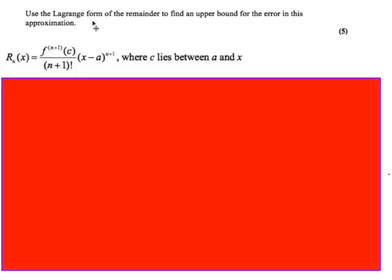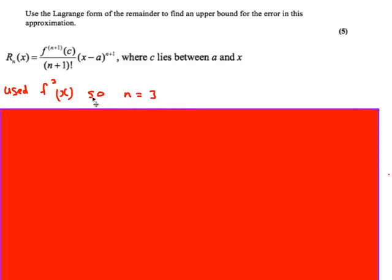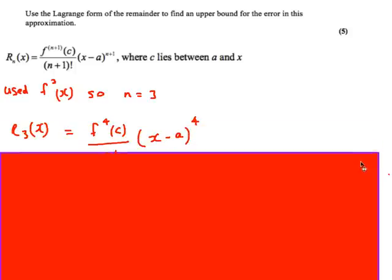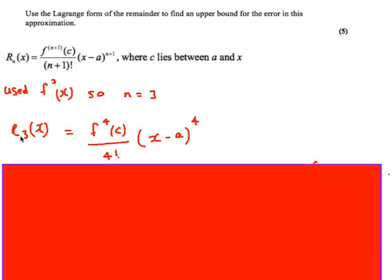So use the Lagrange form of remainder to find an upper bound for the error in this approximation. This is the formula from the formula book: R_n(x) = f^(n+1)(c) over (n+1) factorial, times (x minus a)^(n+1), where c lies between a and x. We've used the third differential in our approximation, so the n value we're taking is 3, because we've approximated up to the third differential. Therefore n is 3. So we can start by writing R_3(x) equals the fourth differential over 4 factorial times (x minus a) to the power 4.